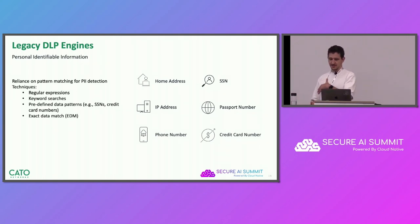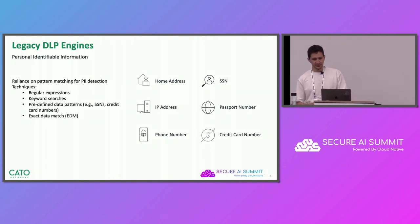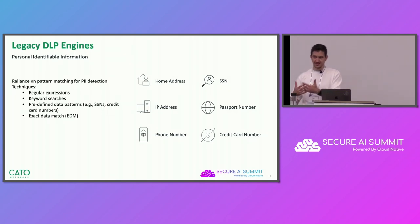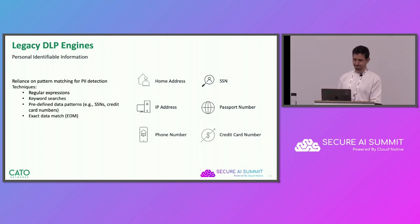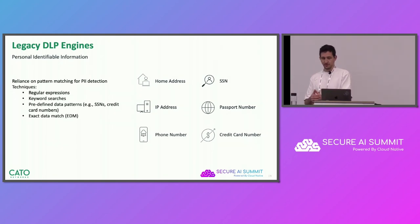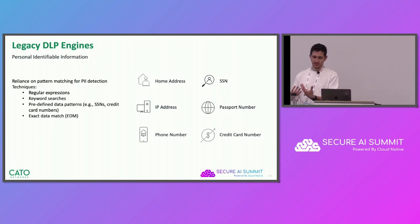Some DLP solutions take this further and allow the user to provide these patterns — that is called exact data matching. The user will provide his specific patterns. For example, if you don't want to block any IP address leaving your company, you could just block the sensitive IPs or range of IPs that relate to your specific servers. However, it's important to note that not all sensitive data has this pattern or is structured, and this is where legacy DLP solutions fall short.